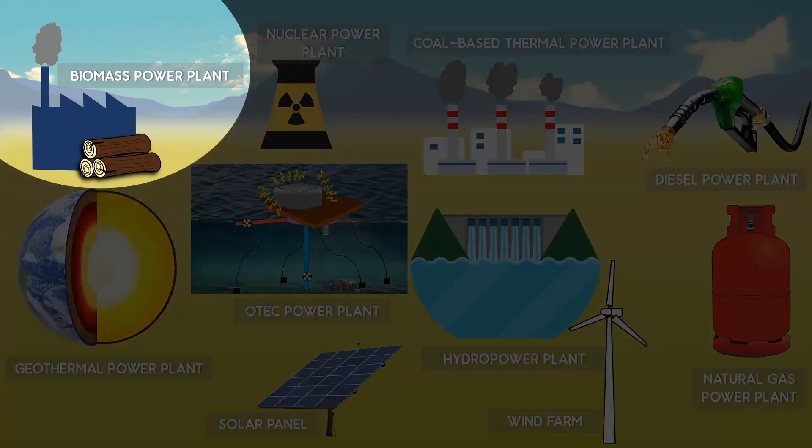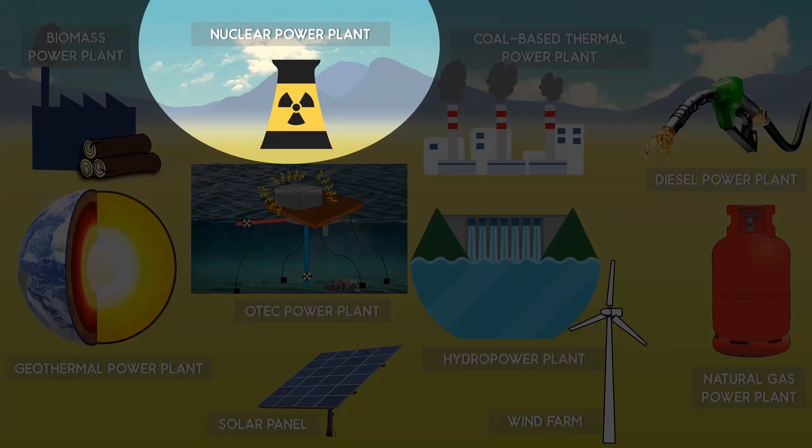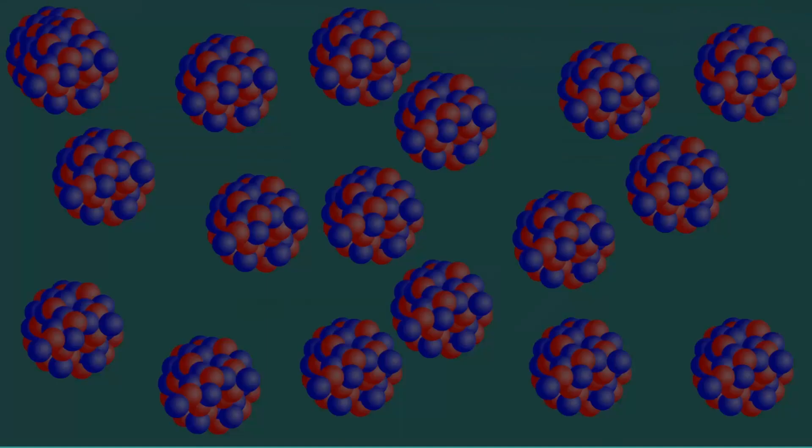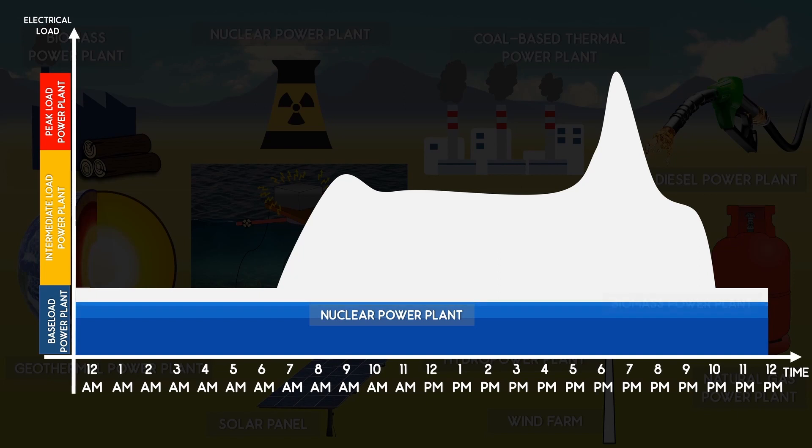Similarly, biomass power plants burn wood to produce steam. And nuclear power plants use the heat from the nuclear fission reaction to produce steam. In these two cases too, if we have a good availability of raw materials, then we can generate continuous power.